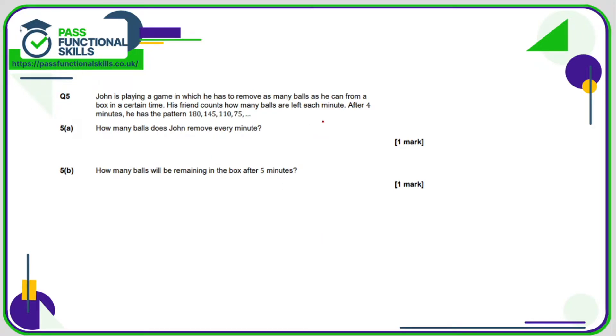Question number 5, so the pattern is 180, 145, 110, 75, so we are going down by 35, so you must be removing 35 balls every minute. And after five minutes, well this is one minute, two minutes, three minutes, four minutes, so all we need to do is subtract 35 from 75, and 75 minus 35 is 40.